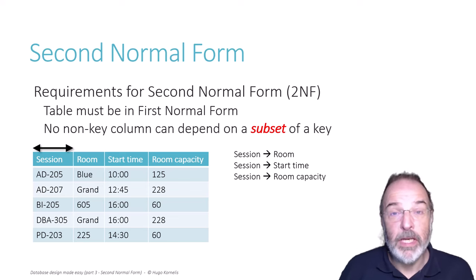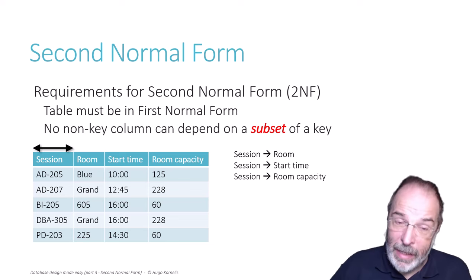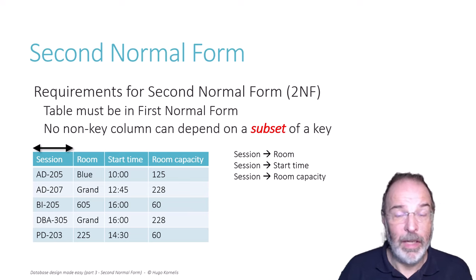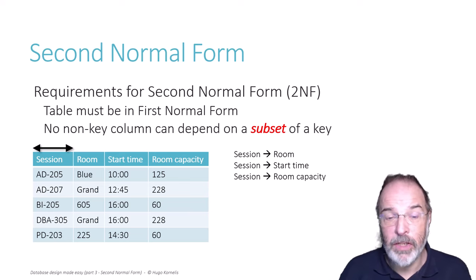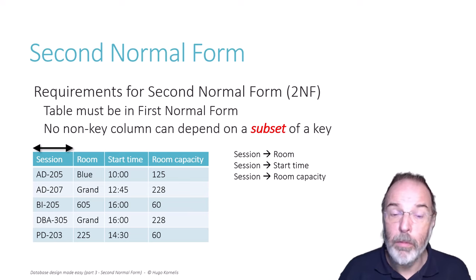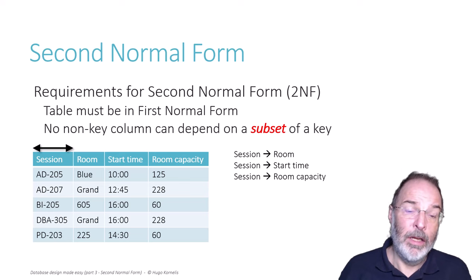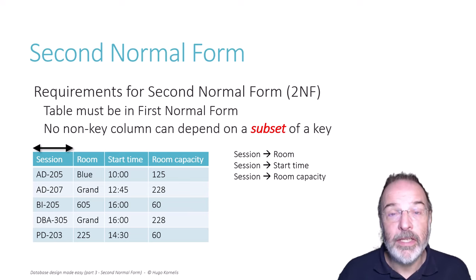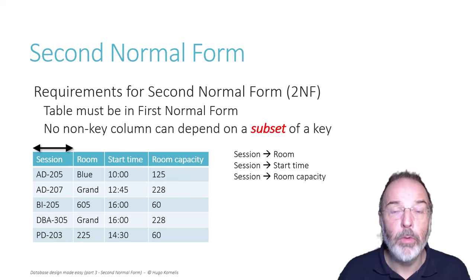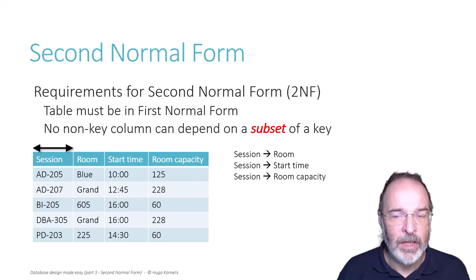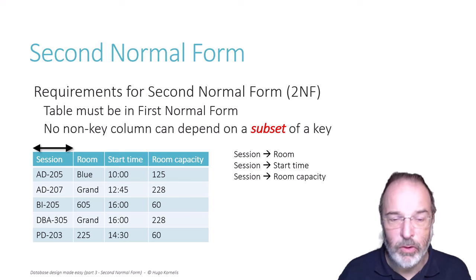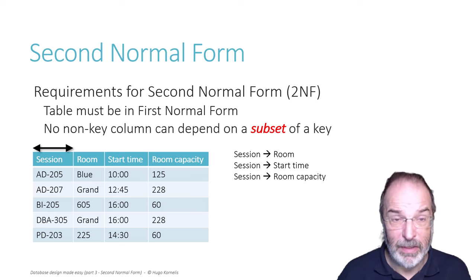If you look at this table and the functional dependencies, you will see that session by itself is a single-column candidate key. Because every other column in this table depends on the session column — if you give me the session number, I can give you exactly one room, exactly one start time, and exactly one room capacity. There will never be a single session that takes place in two rooms, starts at two times, or has two different room capacities.